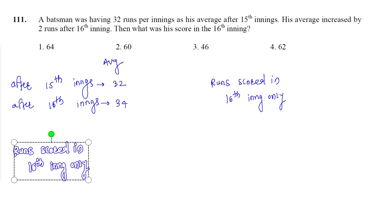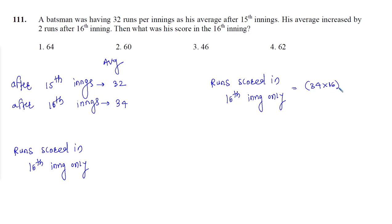So the total runs scored in first 16 innings is equal to average 34 into number of innings 16, minus the total runs scored in first 15 innings which is average 32 into 15 innings. Let's do this multiplication and then subtraction.